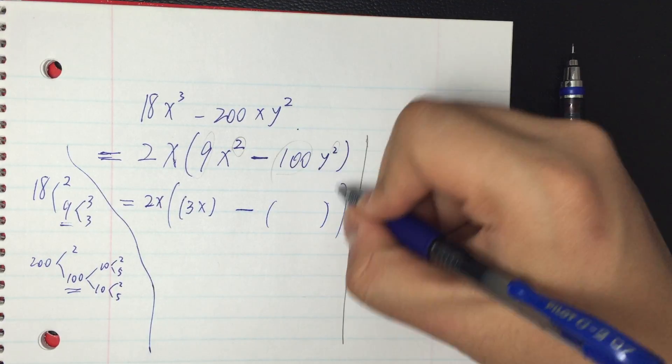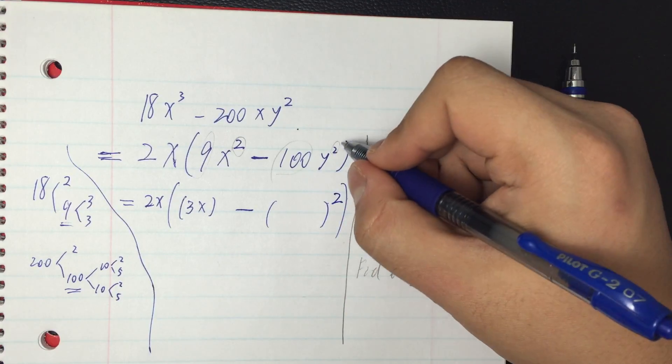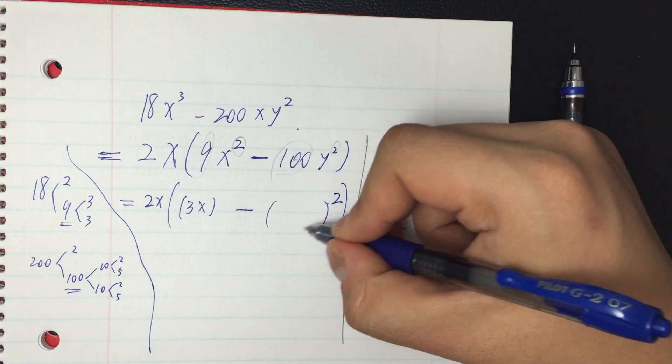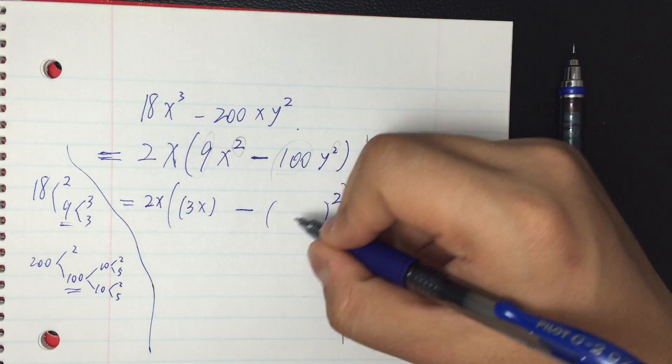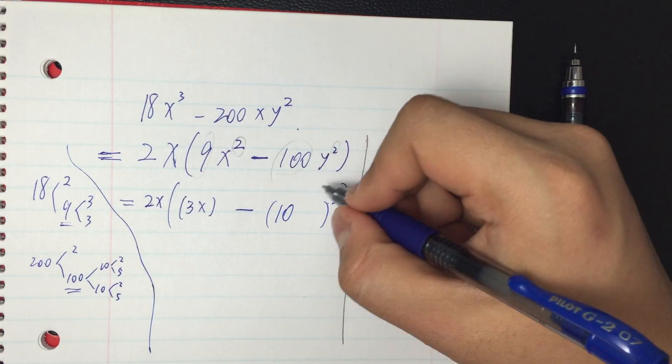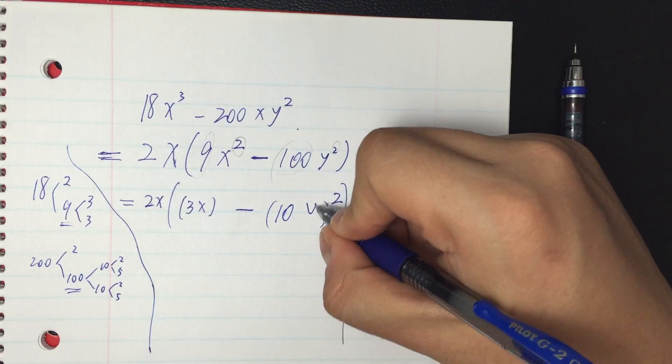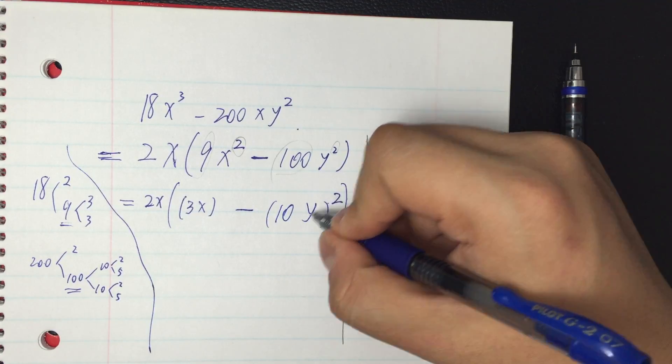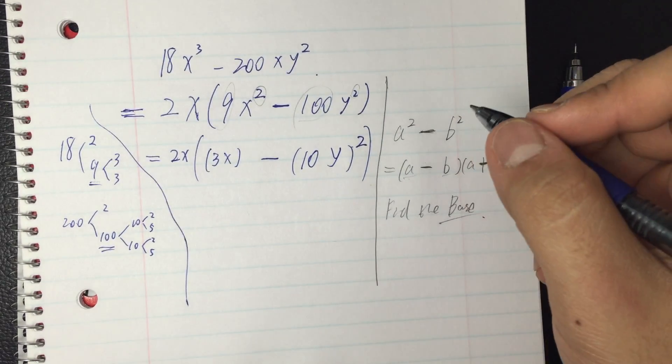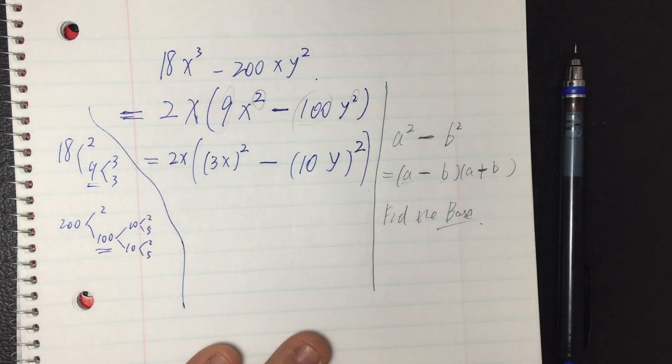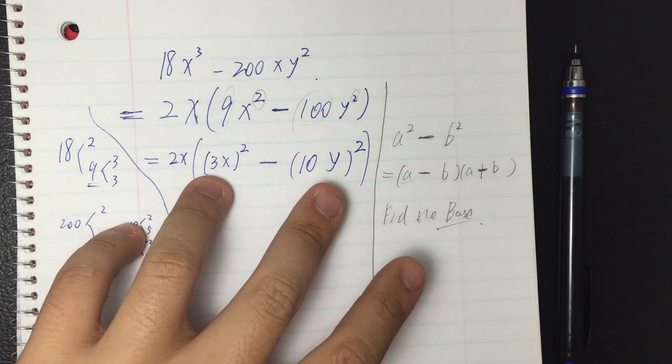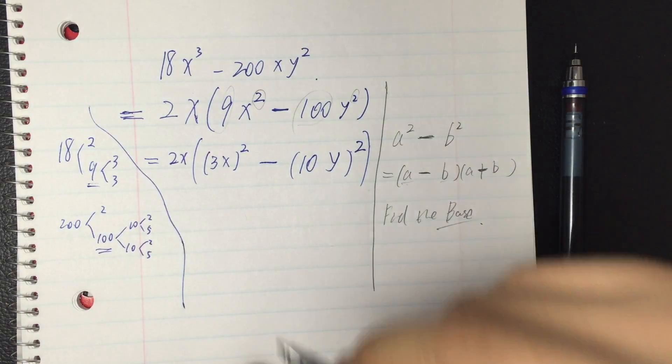And the second one, I have 100y squared. I need to find what squared gives me 100y squared. So square of 10 gives me 100, and square of y clearly gives me y squared.